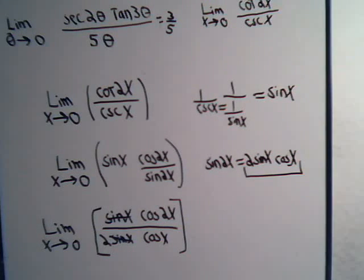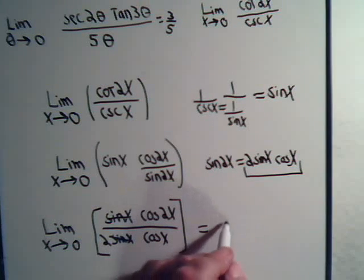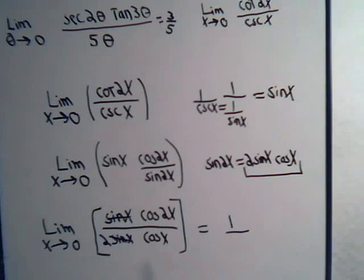Now we're going to get rid of those troublesome sine terms. And now let me just plug in x equals 0. Cosine of 0, that's 1. Cosine of 0, that's 1 times 2, that's 2. That's 1 half.